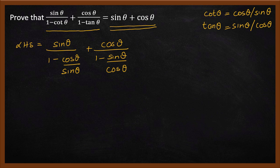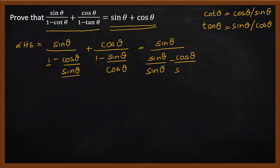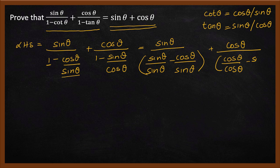And cos theta divided by 1 minus sin theta divided by cos theta, replacing tan theta. So we get sin theta in the numerator, with denominator 1 over sin theta, and cos theta in the numerator, with denominator over cos theta.